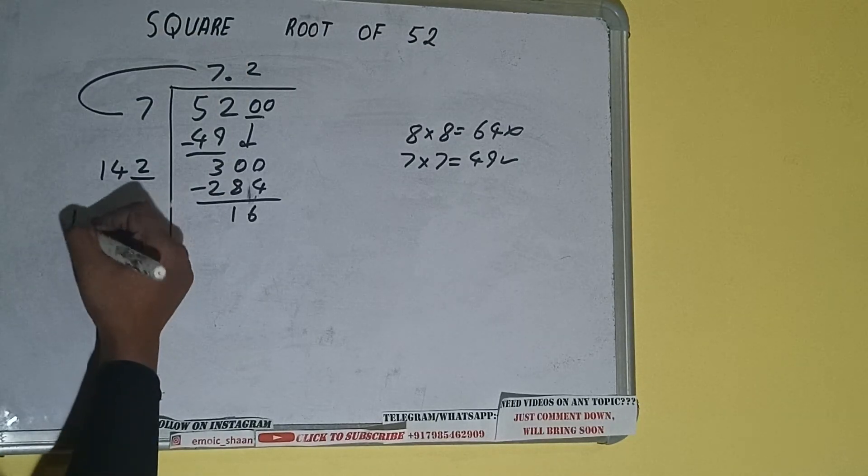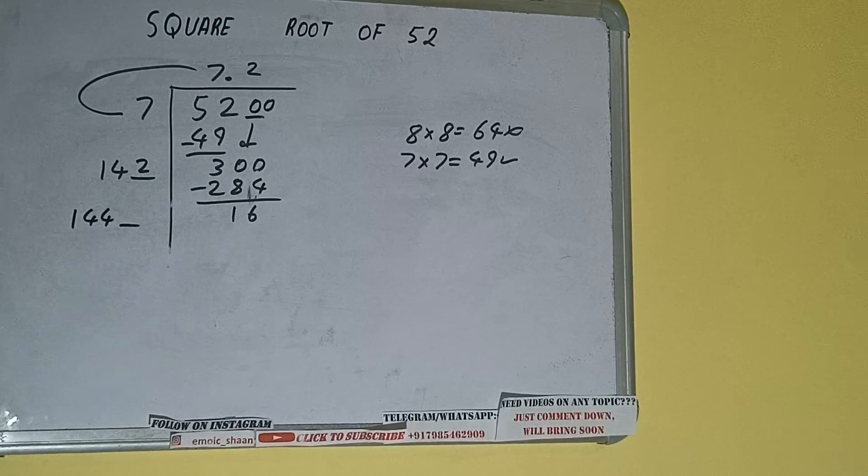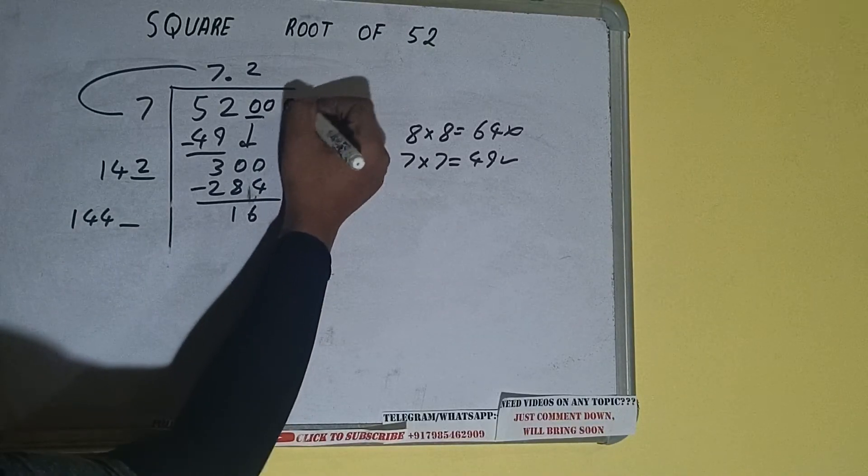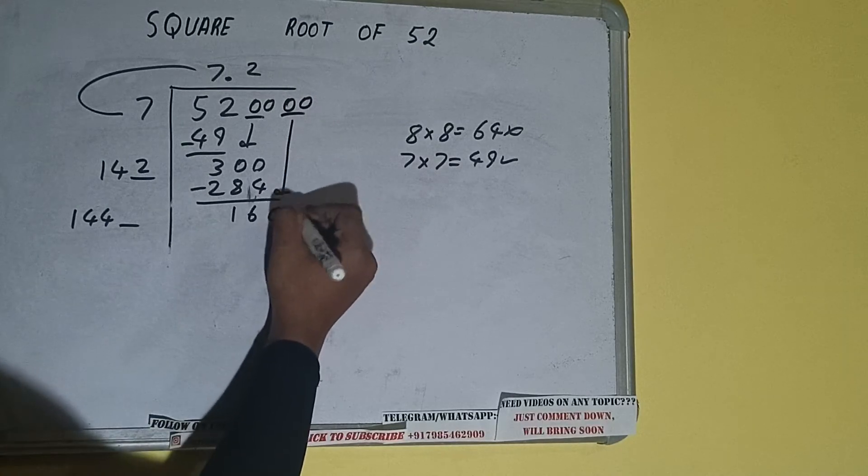And this number we need to make it big. So we'll bring the next pair of zeros down and it will be 1600.